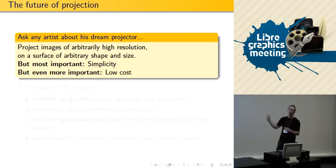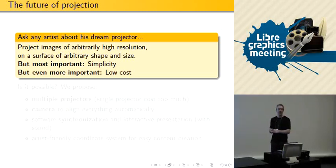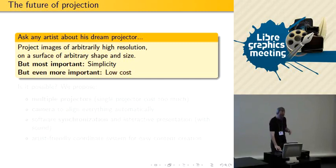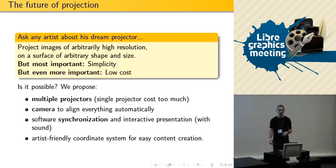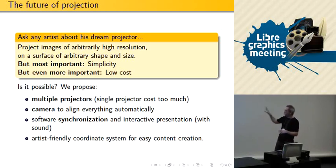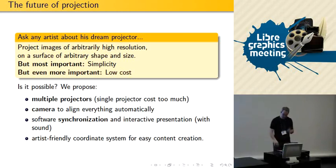More importantly for everybody: low cost. Because if you have millions of dollars you can do almost anything. If you want things to be accessible, it should be low cost — that's an idea behind open source too. What we propose is to use multiple projectors, a camera, and software synchronization.